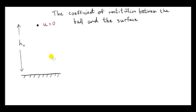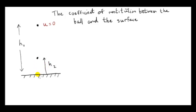Before we look at the exam question, we're going to see how to calculate the coefficient of restitution between a ball and a surface by dropping the ball onto the surface. The ball is dropped at a height h1 to the surface, so its initial velocity is 0. We assume that after the ball has struck the surface, it rises up a height h2. We're going to see how we can use these two heights to calculate e.